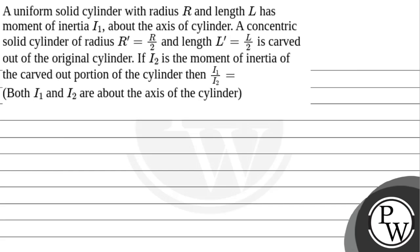Hello, let's read this question. The question says: a uniform solid cylinder with radius r and length l has a moment of inertia i1 about the axis of the cylinder. A concentric solid cylinder of radius r' = r/2 and length l' = l/2 is carved out of the original cylinder. If i2 is the moment of inertia of the carved-out portion of the cylinder, then i1 divided by i2 is equal to — both i1 and i2 are about the axis of the cylinder.